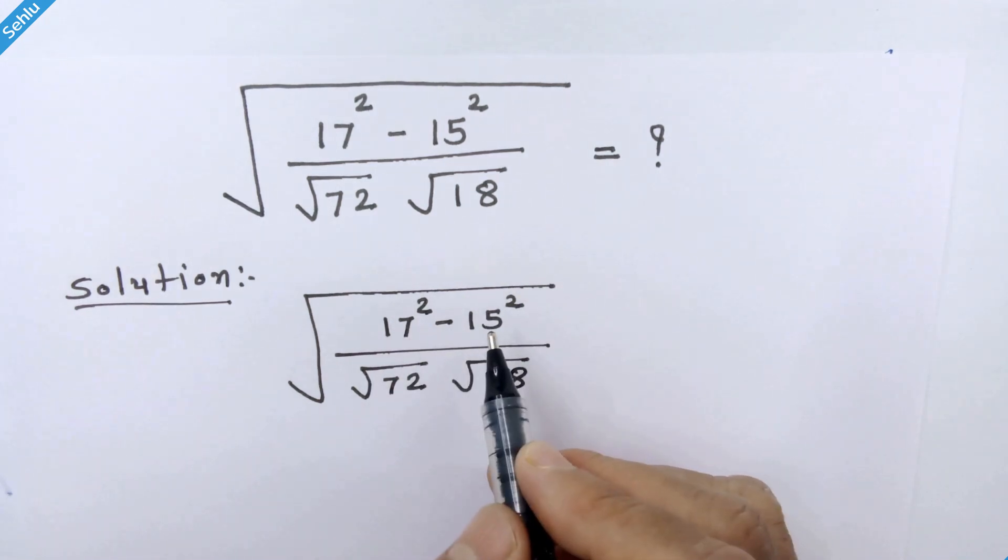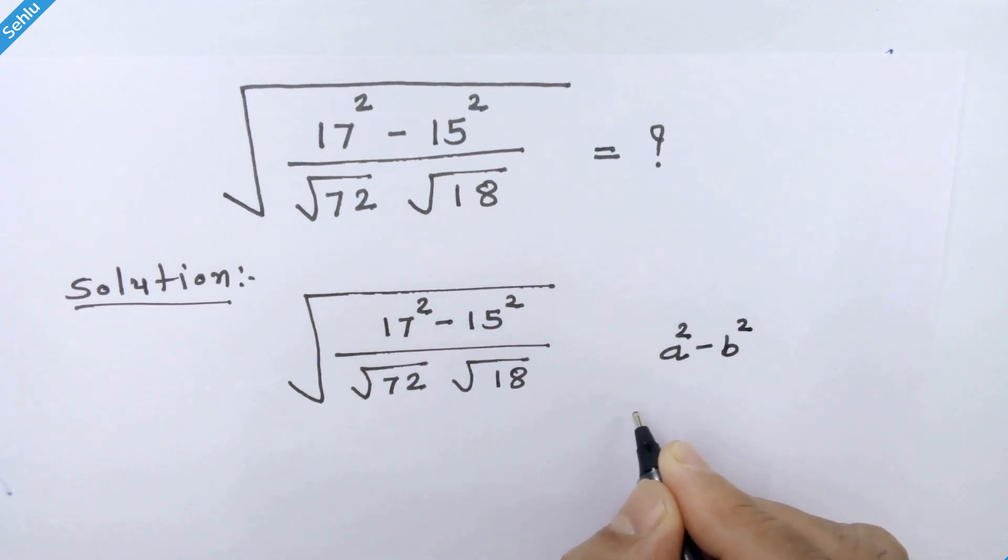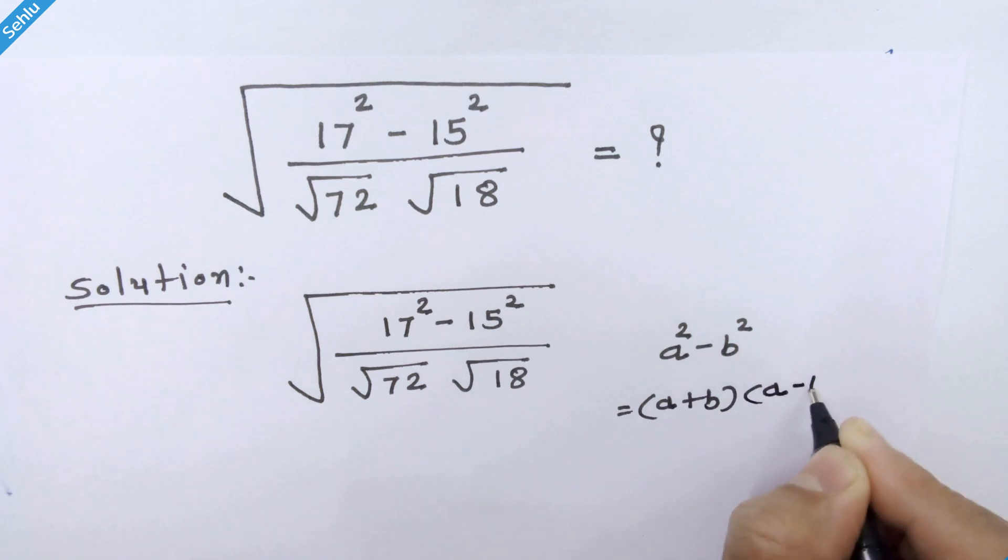This is an identical form of a squared minus b squared which can be written as a plus b times a minus b.